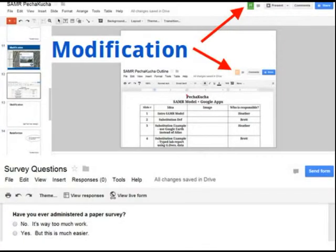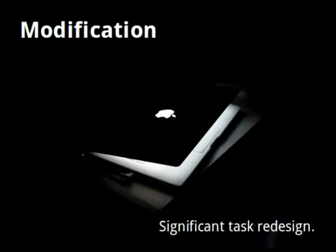Google Apps have enabled similar modifications to the learning experience. Students are now able to collaborate in real time using Google Docs or collect data using Google Forms. Imagine how much more effective a student survey would be if they could deliver 500 questionnaires online rather than having to do the same with paper and pencil. It's clear that these technologies have enabled the redesign of student learning opportunities, providing exactly the platform needed for us to take the final step to redefinition.